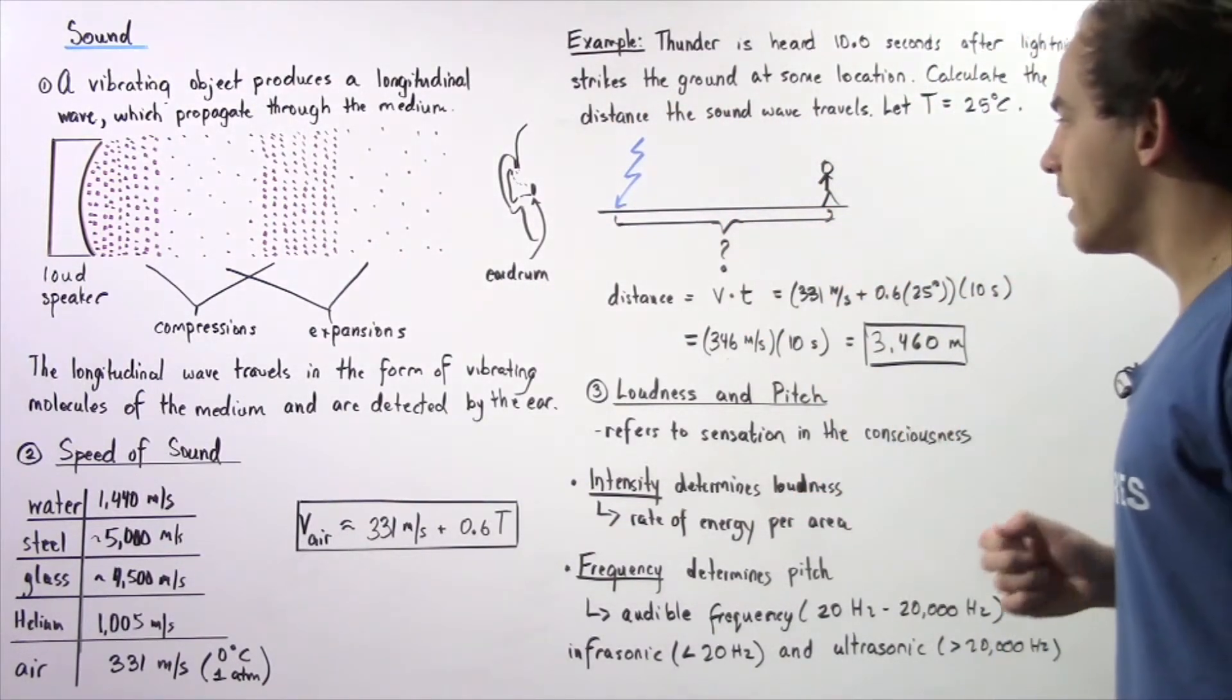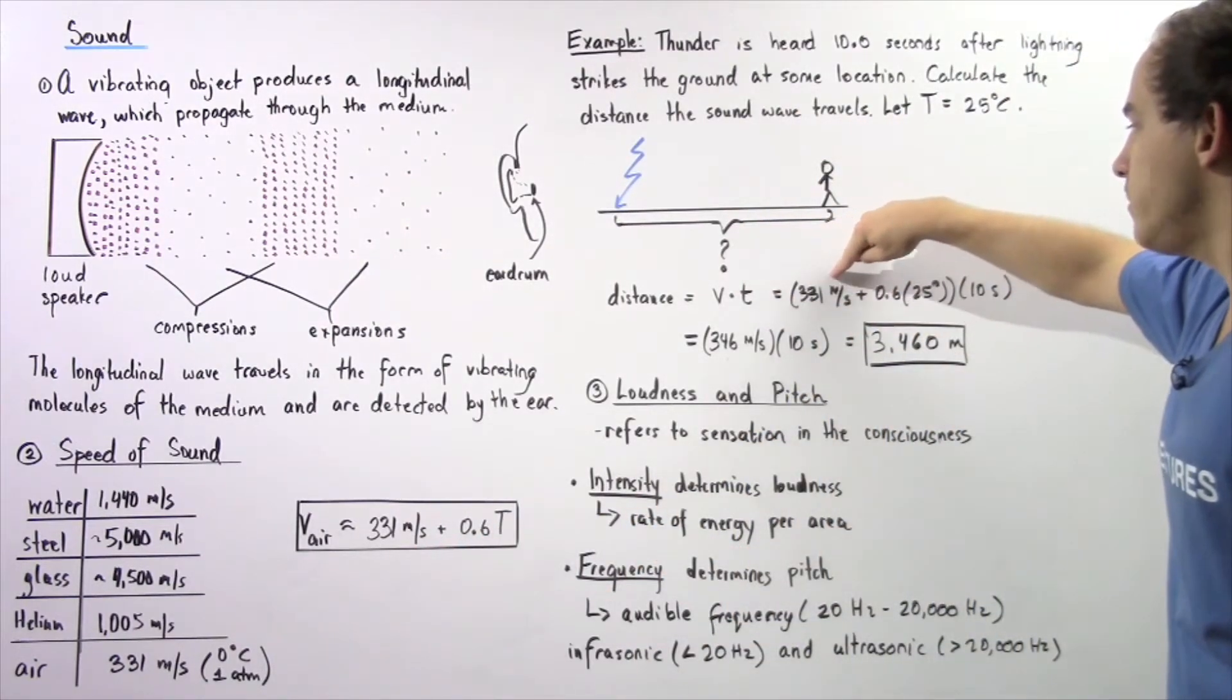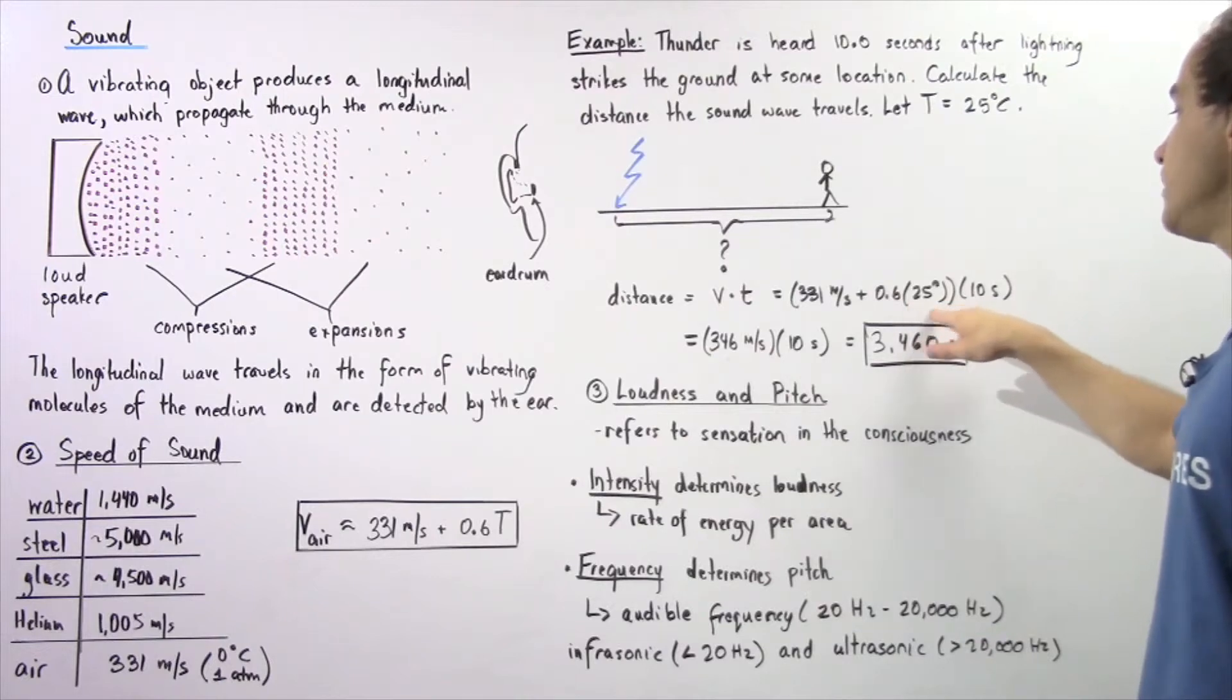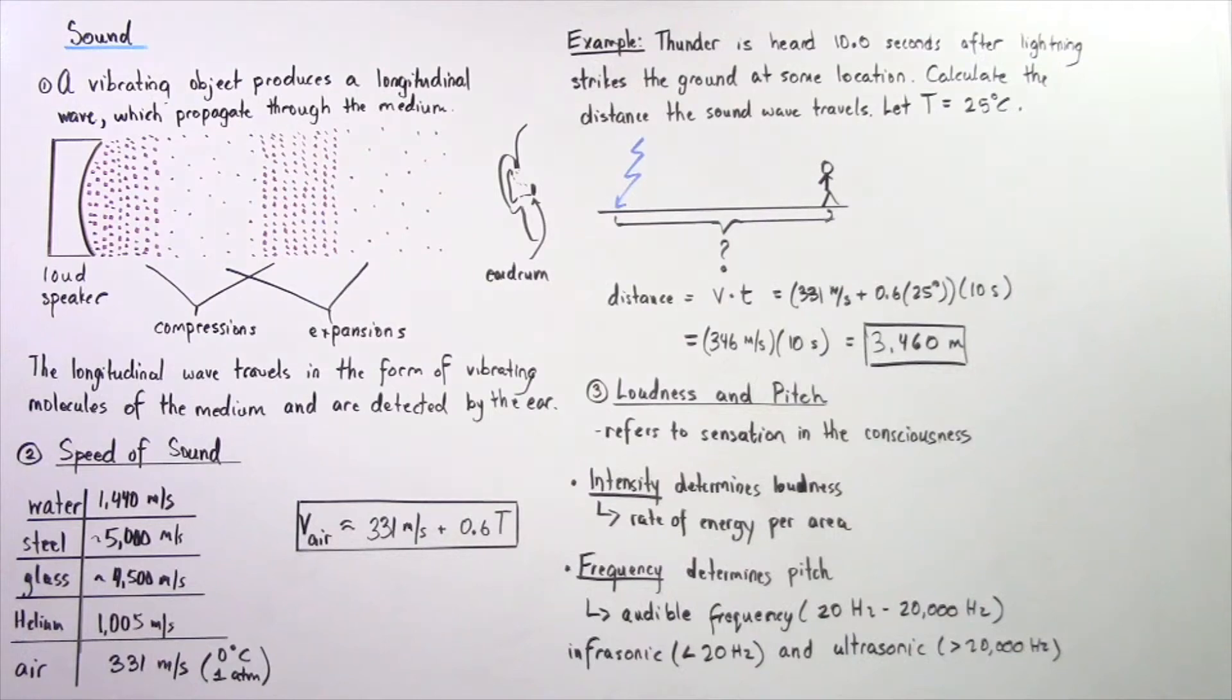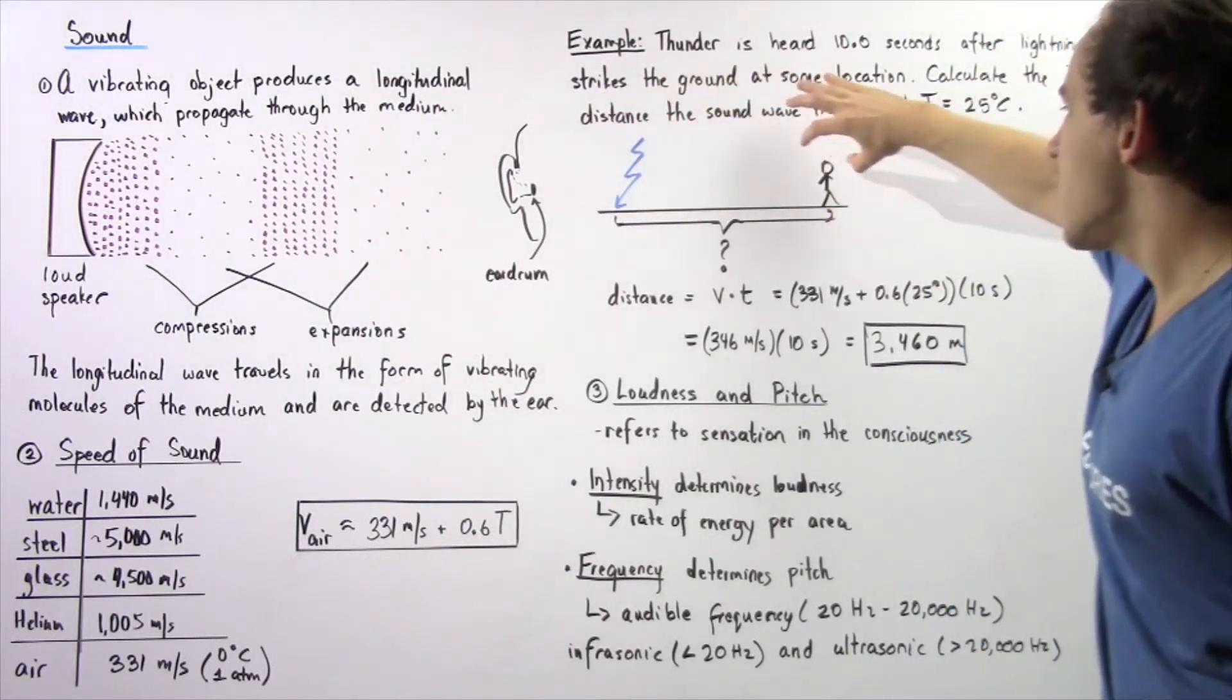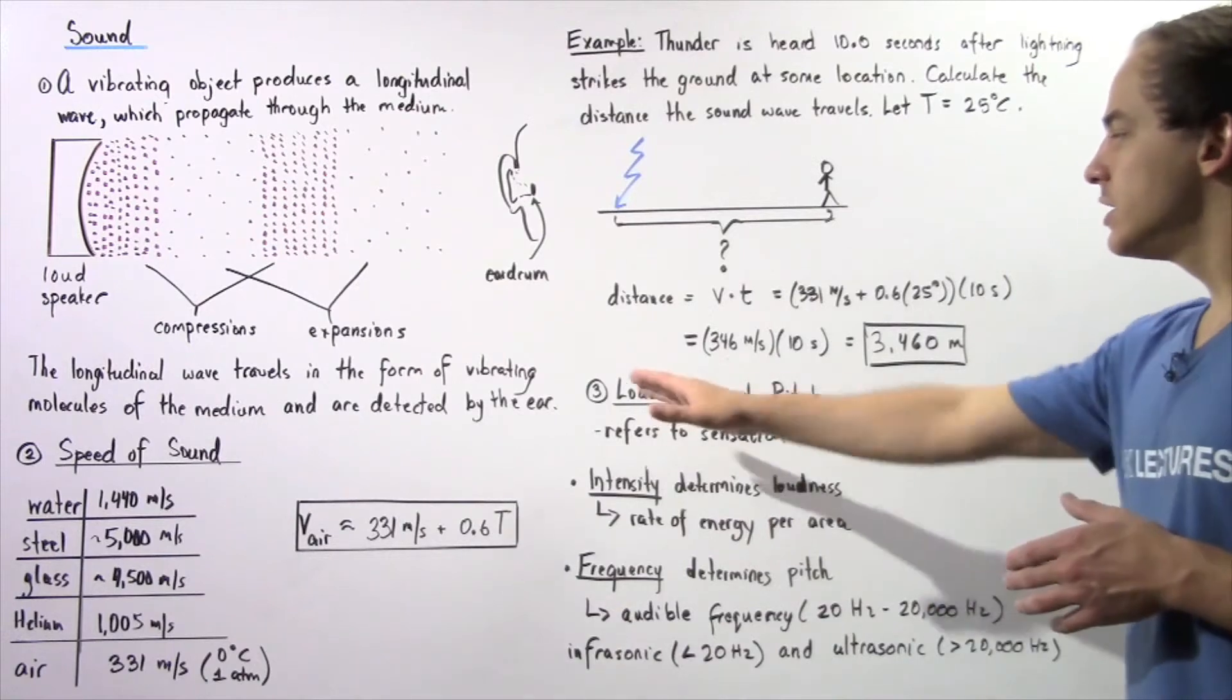To calculate the distance, we multiply the time by the velocity of the sound wave. The velocity is 331 meters per second plus 0.6 times 25 degrees Celsius, which gives us 346 meters per second, multiplied by the time of 10 seconds. We get 3460 meters as the distance between where the lightning strikes and where the person is listening to that thunder. This is approximately 2.2 miles.